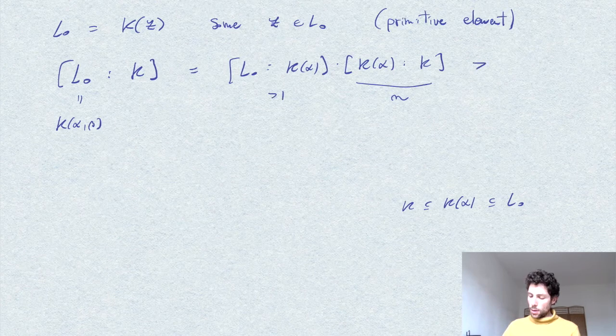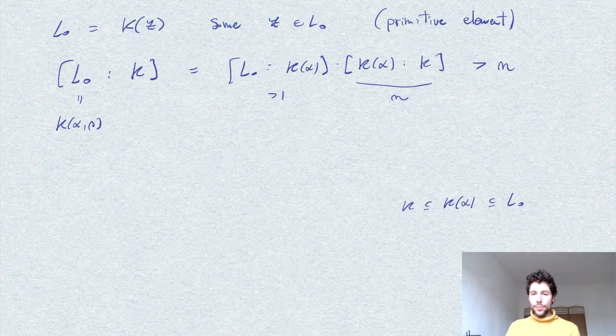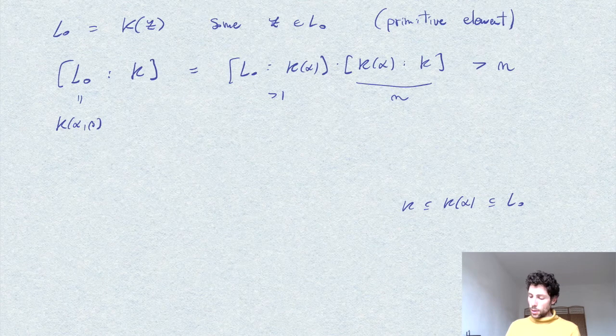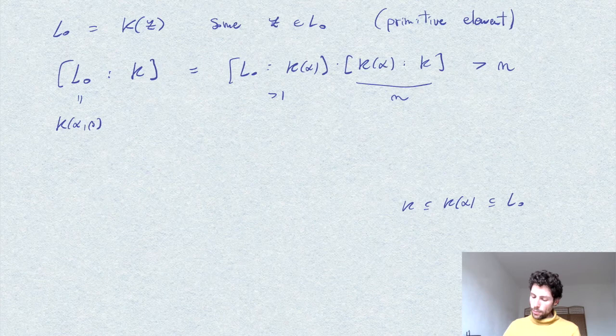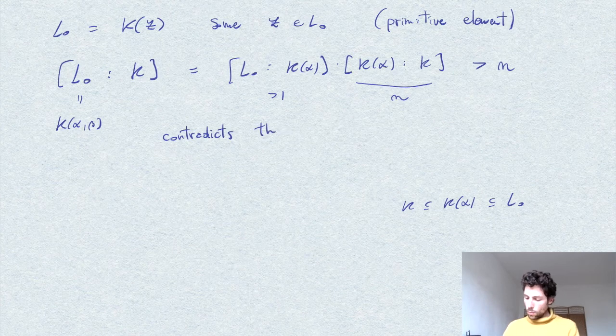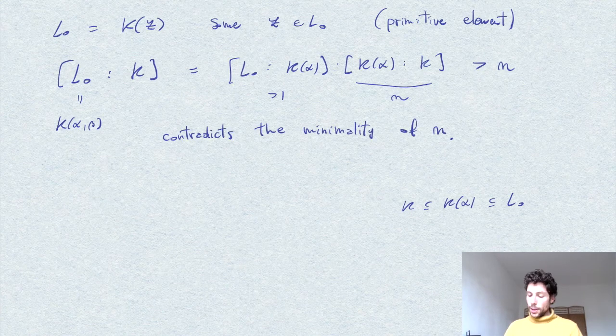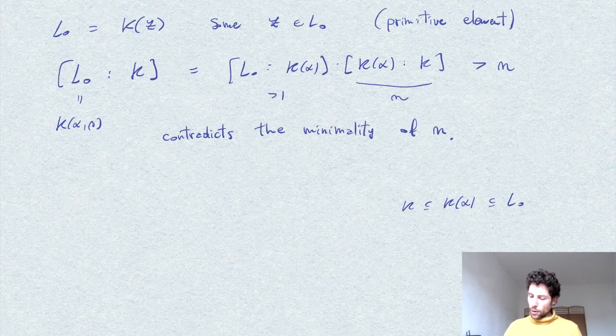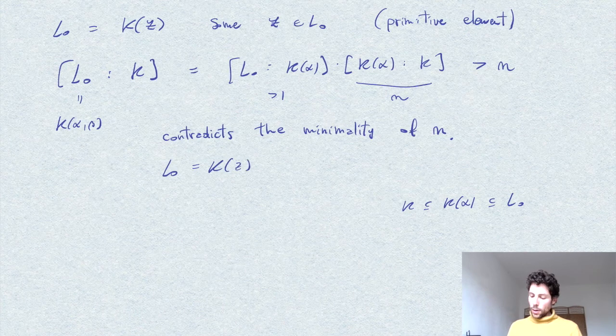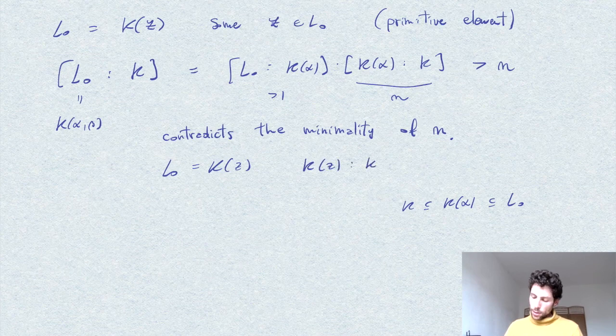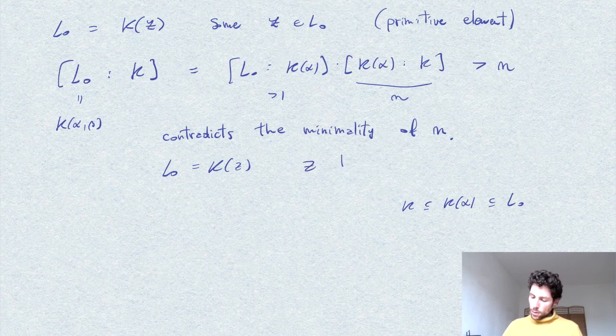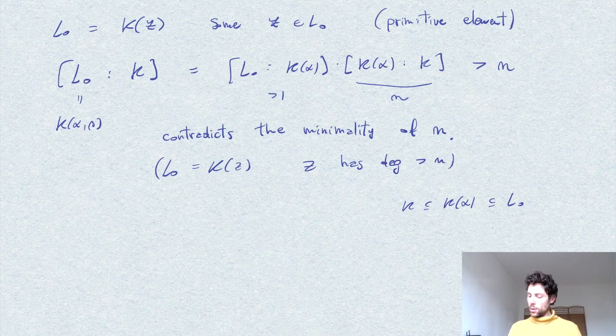So we obtain that this is strictly bigger than n, which clearly contradicts the minimality of n. In the sense that if we think of L0 now as a simple extension, we found an element z for which k of z has a degree strictly bigger than n. And this is a contradiction by our assumption of n.